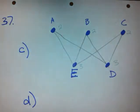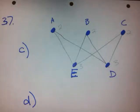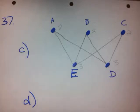Let's take a look at 37C and D. We've already done A and B — those were about Hamilton circuits. Part C asks us to modify the given graph by removing the least number of edges so that the resulting graph has an Euler circuit.